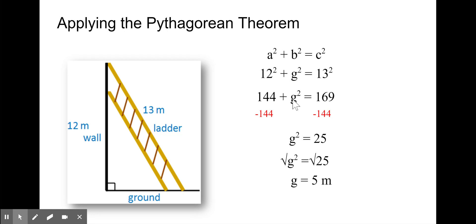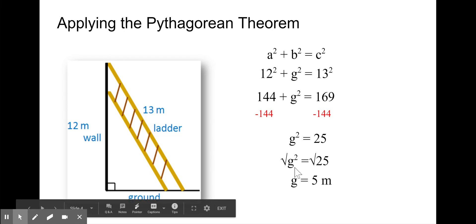We want to get g squared all by itself, so we use inverse operations. And then we take the square root of both sides, since that's the inverse operation of squaring a number, and we find that the ladder should be placed 5 meters away from the wall on the ground.